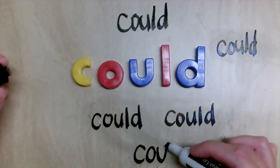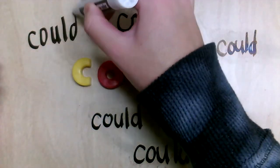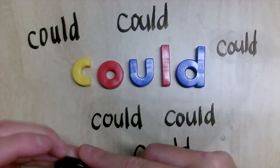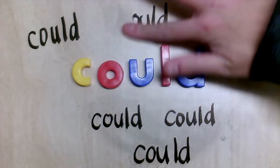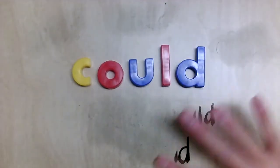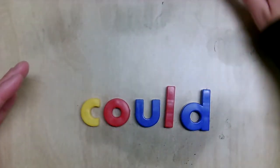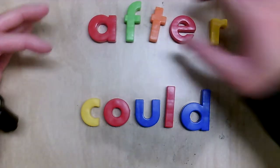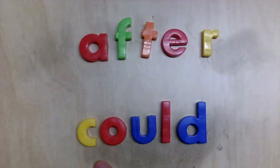The next time you come across this word, you will absolutely, positively, 100% be able to read it — because you have written it so many times and spelled it so many times, you know exactly what it says. You're not going to stop and solve it again and again. You are going to make sure you are a word detective that makes new snap words. So we had the word could, and we also had the word after.